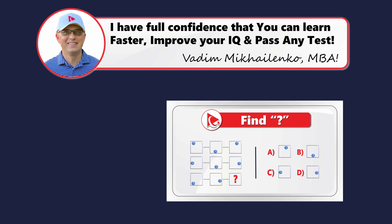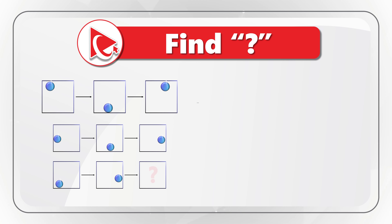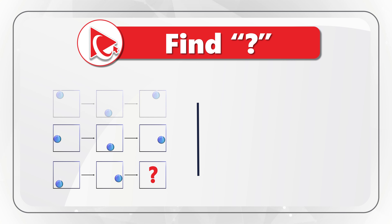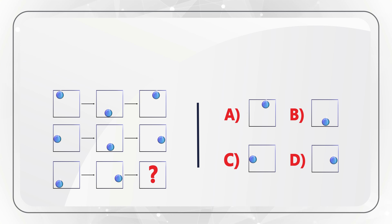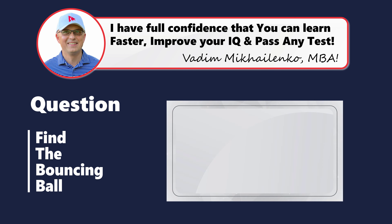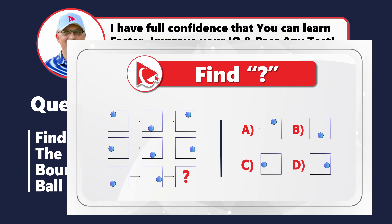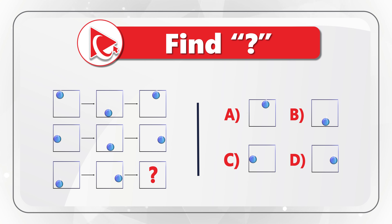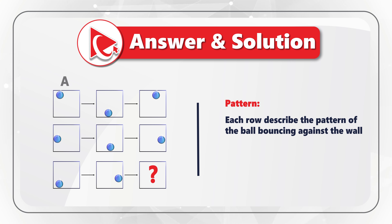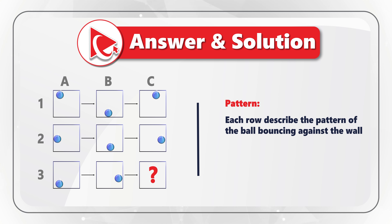I love this question because it really boosts your IQ and improves your intelligence. You're presented with three rows of objects. Each object represents a square with a circle inside. You need to select the missing object out of four possible choices: A, B, C, and D. To better solve this challenge, let's assign columns and rows — columns A, B, and C and rows 1, 2, and 3. Each row describes the pattern of a ball bouncing against a wall.